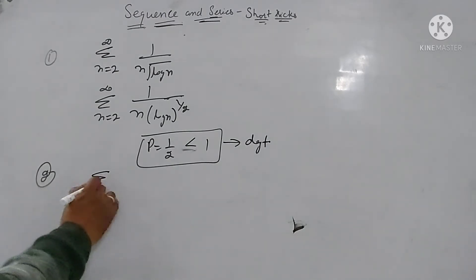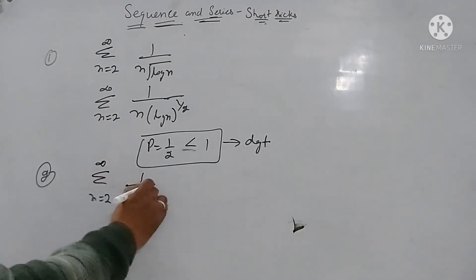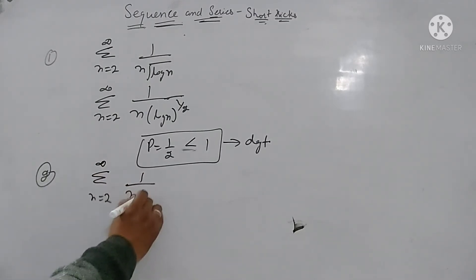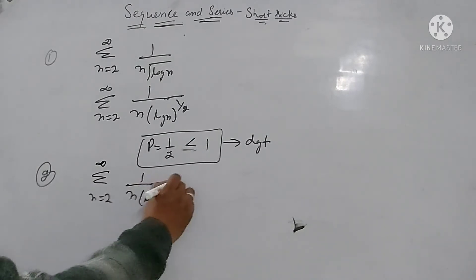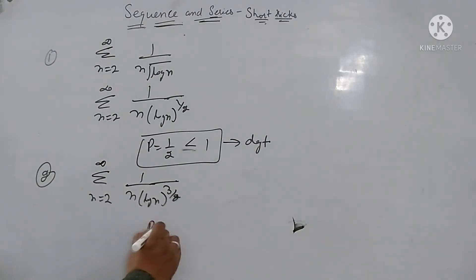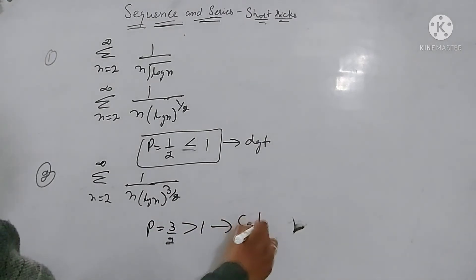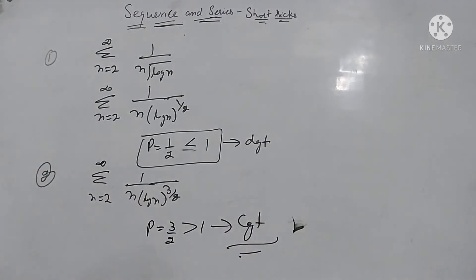Next example: suppose summation n varies from 2 to infinity of 1 upon n·(log n)^(3/2). In this case P is 3 by 2, and since 3/2 is greater than 1, this series is convergent. Check whether this type is forming or not.